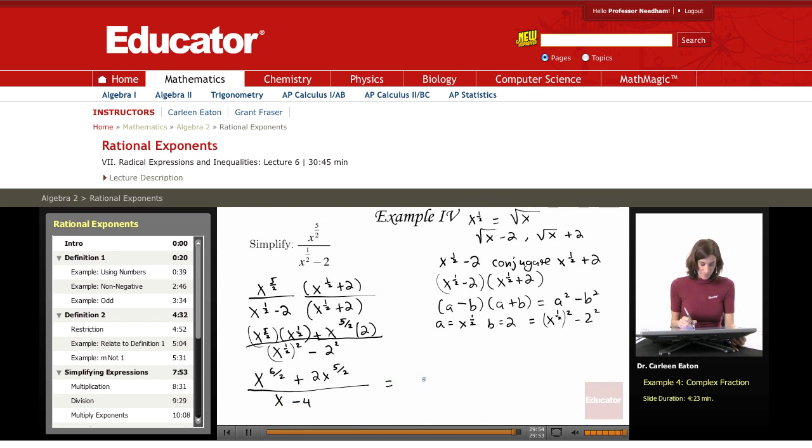This is going to give me 6 divided by 2, which is x to the 3rd, plus 2x to the 5 halves divided by x minus 4.